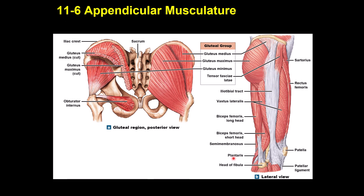For the hip girdle and lower limb, the gluteus maximus causes extension and lateral rotation of the hip. Gluteus medius and gluteus minimus, which lies deep to the medius, cause abduction and medial rotation of the hip joint. Tensor fasciae latae also causes flexion of the hip joint.